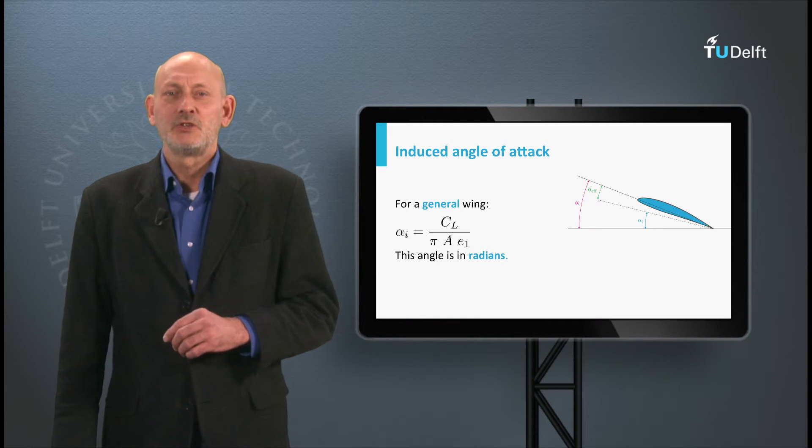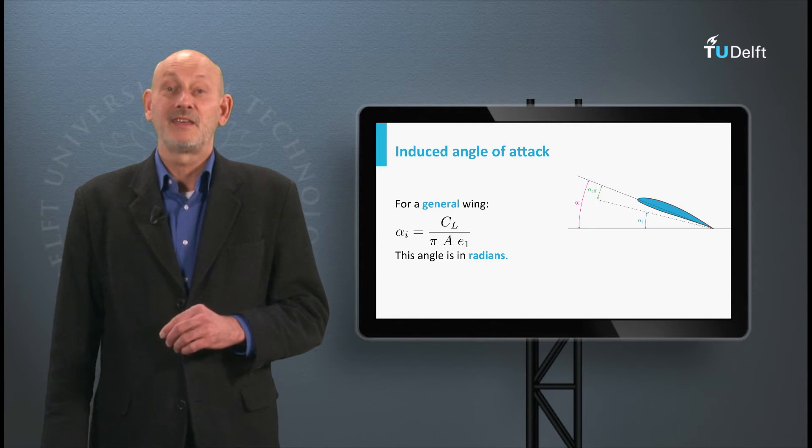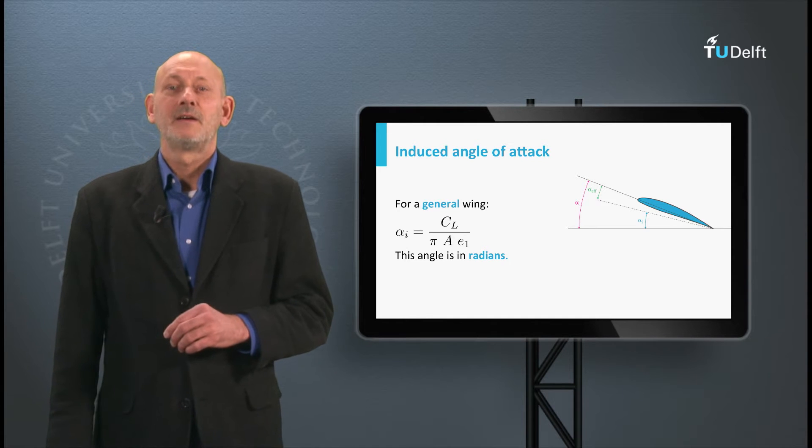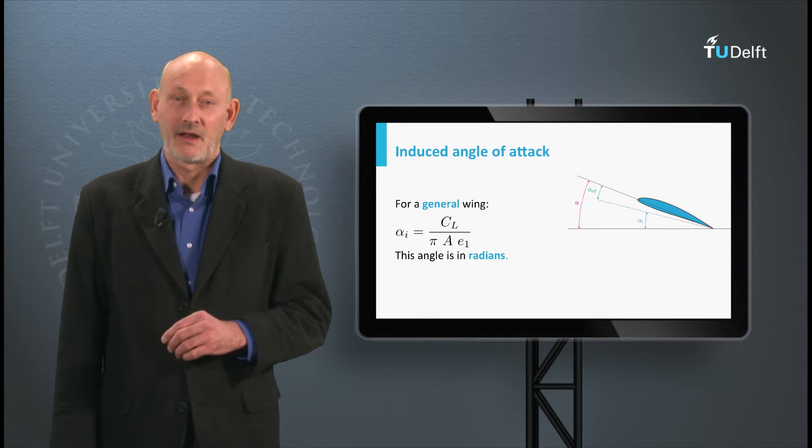For a general wing, the induced angle is defined as alpha_i is CL divided by pi A e1. e1 is the span efficiency factor and A is the aspect ratio given by the span squared divided by the wing area.